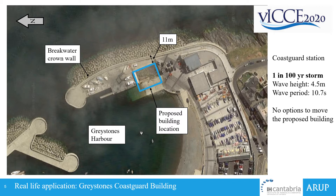The design conditions for the breakwater, which was built fairly recently, were available to us. Looking at the 1-in-100-year storm criteria, you can see that the incident wave height is quite high. A lot of the constraints and limits given in the Eurotop manual are for waves of a height less than three metres, particularly if you're looking at vehicle and pedestrian criteria.